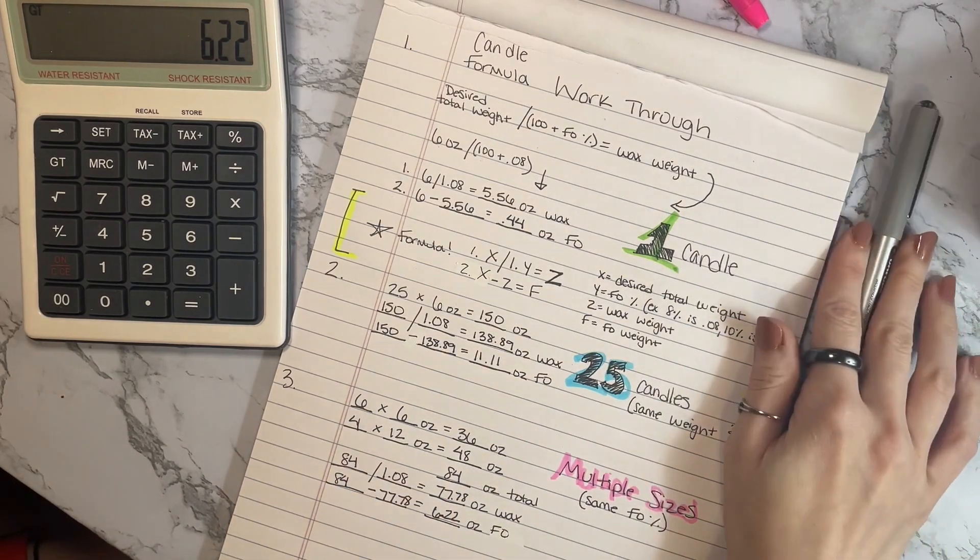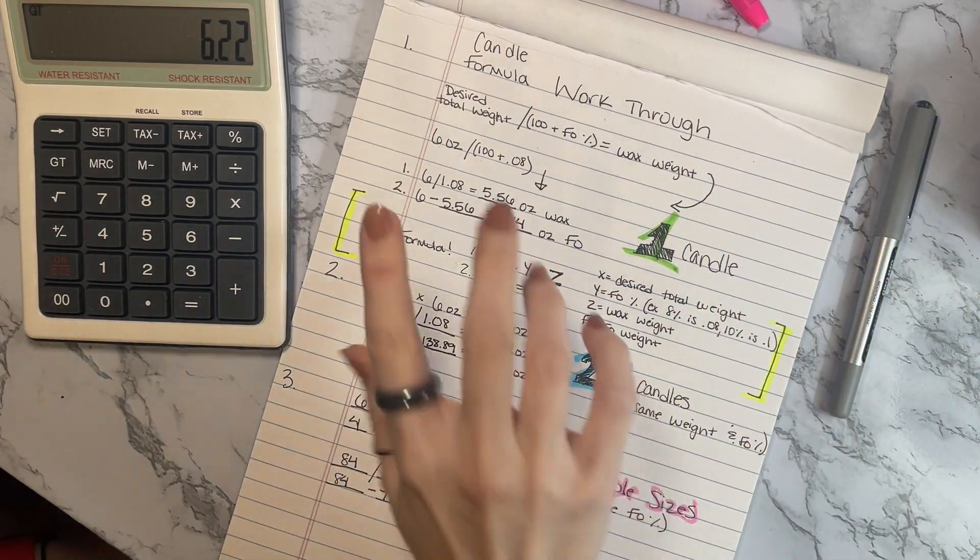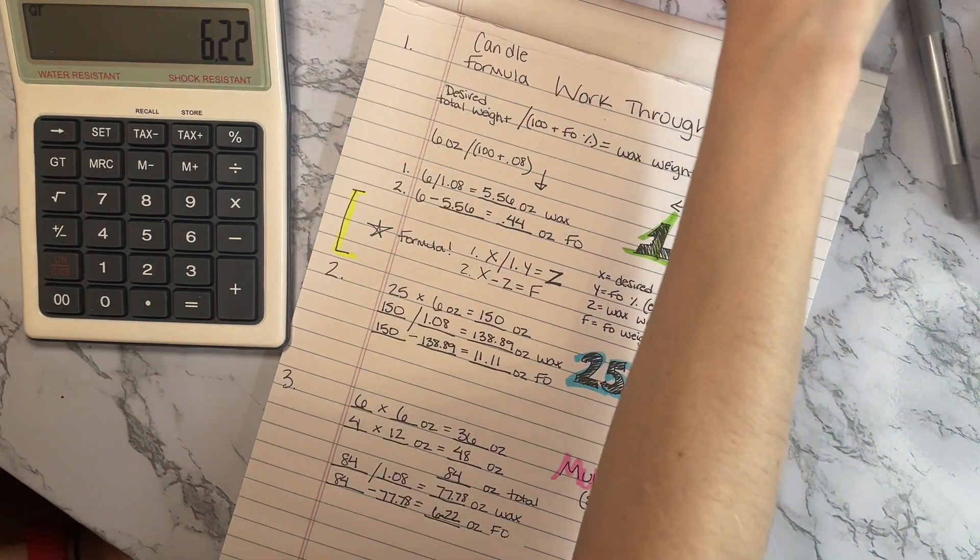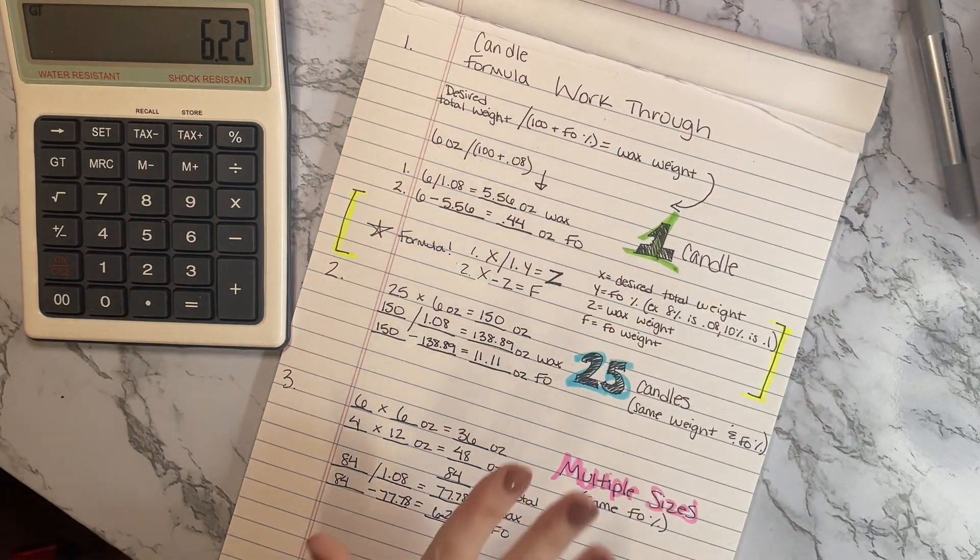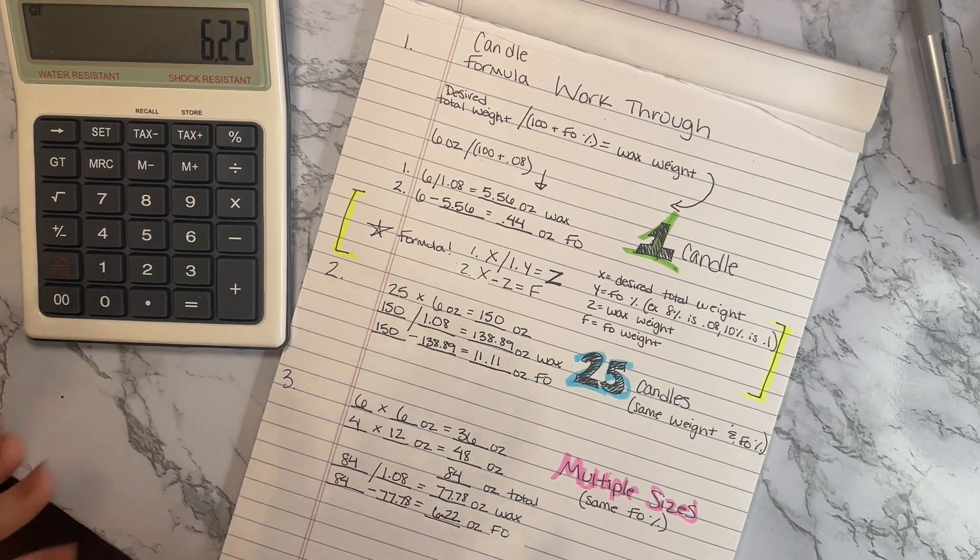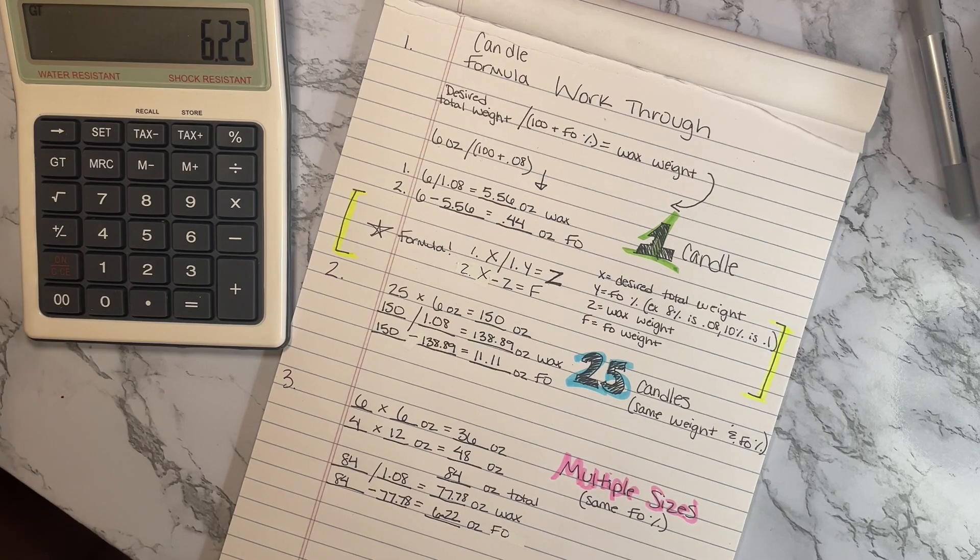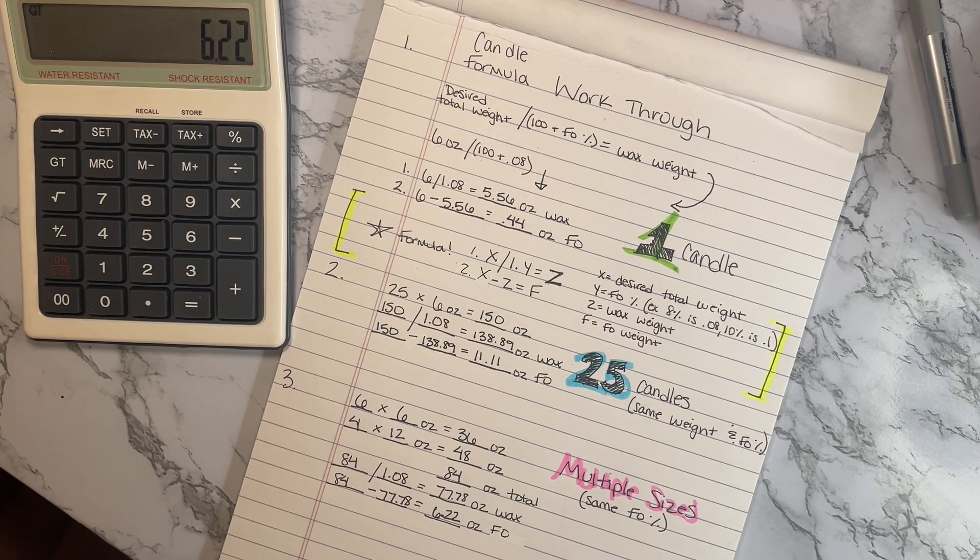That'll be what you want to make all together, and that's assuming that you're using the same fragrance oil percentage, the same formula, the same waxes and everything. You can do this with more than just two sizes, you would just add another area right here that times however many ounces that jar is, and then add all three of those together and then use that new number right here. I hope that that made sense.